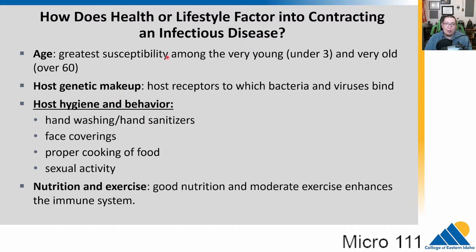When you're very young — under three — your immune system is not fully developed, so you are susceptible to disease. As you get very old — over 60 — you become much more susceptible. With COVID-19, the young group was not really susceptible, but we did see a large number of elderly people die from COVID-19.